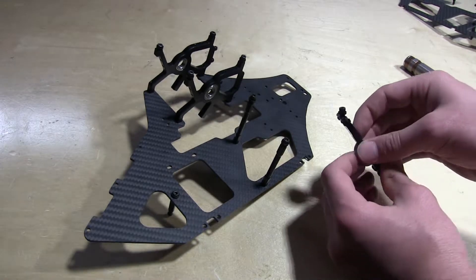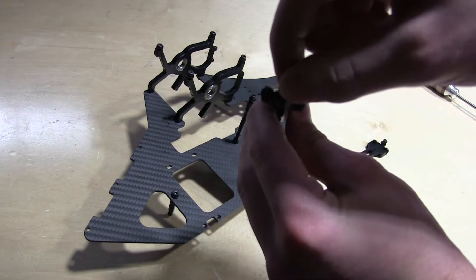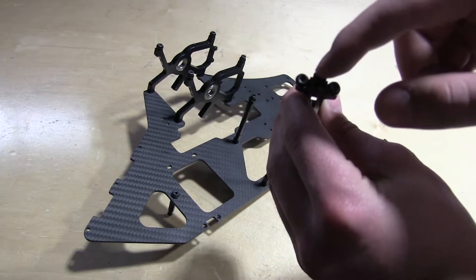Up next we're going to be attaching the landing gear mounts. It's going to be just two screws going into the frame. Don't worry about this one up top, these are used for the landing gear.